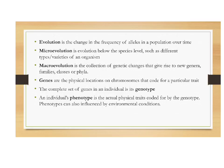Evolution, by definition, is the change in the frequency of alleles in a population over time. An allele is a variant of a gene. Micro-evolution is evolution below the species level — types and varieties within a species. Macro-evolution is the collection of genetic changes that give rise to new genera, new families, new classes, or new phyla.